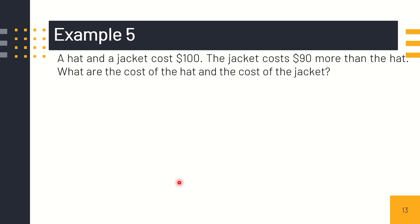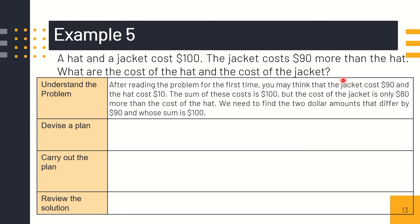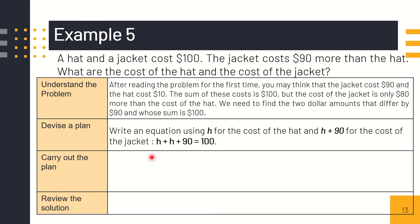Example number 5: a hat and a jacket cost $100. The jacket cost $90 more than the hat. What are the costs of the hat and the jacket? Understand the problem. After reading the problem for the first time, you may think that the jacket costs $90. Because it says the jacket cost $90, but it says more than the hat. And the hat cost $10. The sum of these costs is $100, but the cost of the jacket is only $80 more than the cost of the hat. We need to find two amounts that differ by $90 and whose sum is $100. First, write an equation. In this problem, we can represent it into variables.